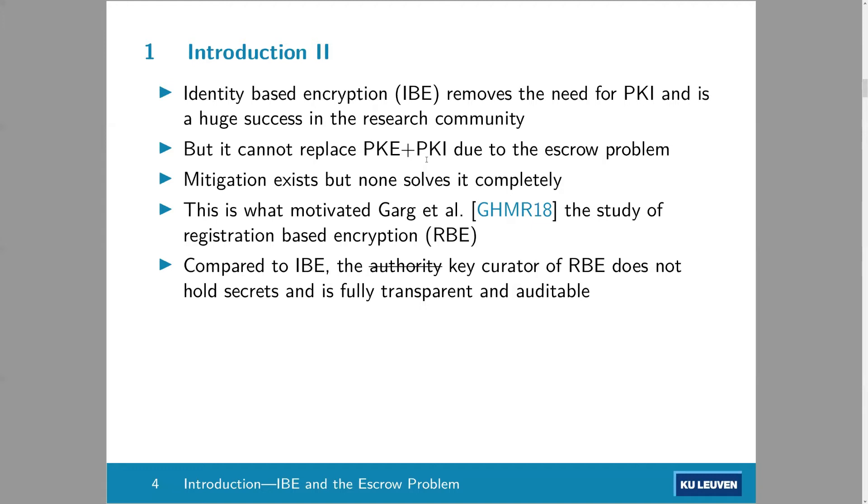So here's a summary of what I mentioned earlier. IBE removes the need for PKI. It's been a huge success in the research community. There are a lot of generalizations of IBE, like attribute-based encryption and functional encryption. But in practice, it hasn't replaced the public key encryption plus PKI paradigm due to the escrow problem. There are many mitigations. These essentially boil down to distributing the master secret key or the authority. But these mitigations, they don't solve the problem completely. So the private, the master secret key still exists. It just might be in a distributed form. And this is what motivated Sanjam Garg and others to study registration-based encryption, or RBE.